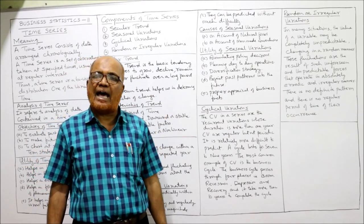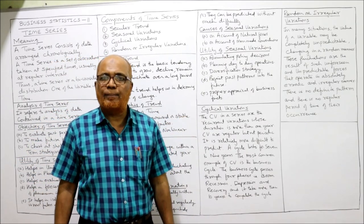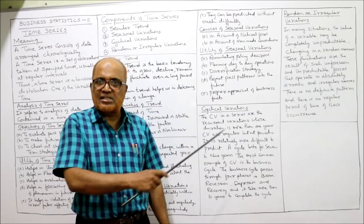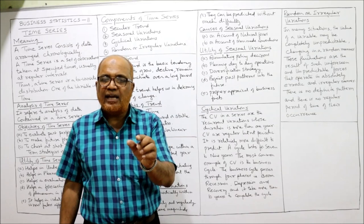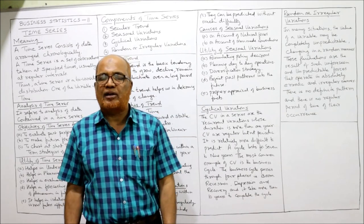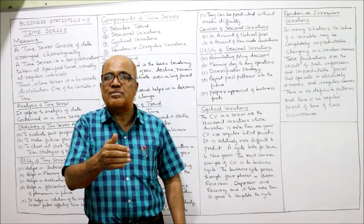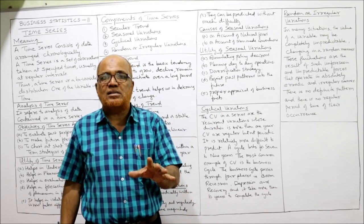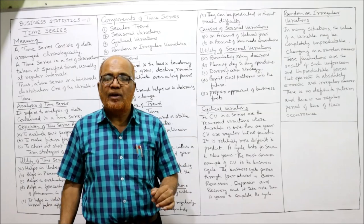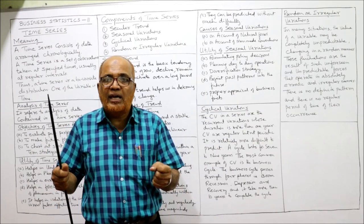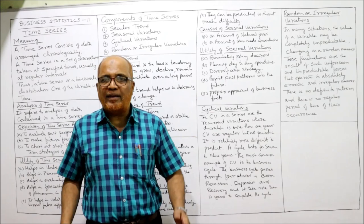Utility of seasonal variation: why do we study seasonal variations? First is formulating policy decisions — the study of seasonal variation is very much helpful to management for making policies and planning. Before summer season comes, the soft drink company makes plans: production will increase, resources will be organized, planning for production and distribution will be done. Second utility is planning day-to-day operations — by studying seasonal variations we can make day-to-day planning also.